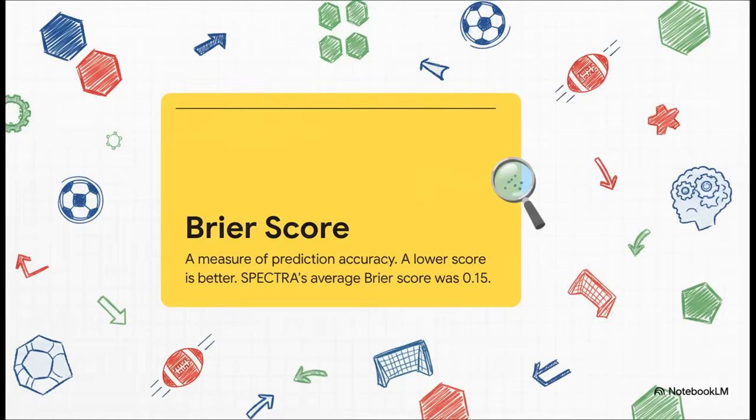Okay, for the data heads watching, here's a key stat for you. The Brier score. All you really need to know is that it measures how accurate these kinds of predictions are, and the lower the score, the better. Spectra's score of 0.15 is considered excellent. It means its predictions aren't just lucky guesses. They are well-calibrated and statistically really solid.